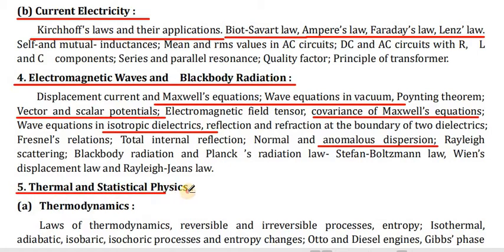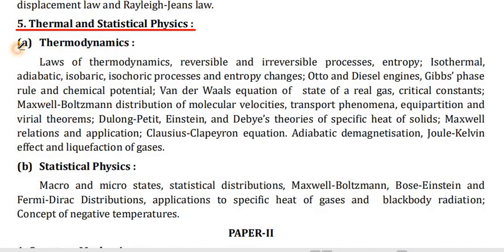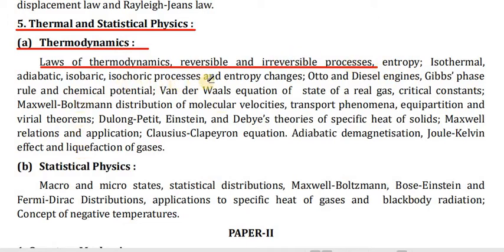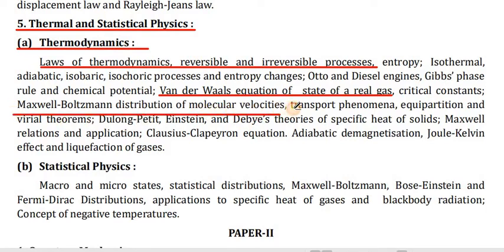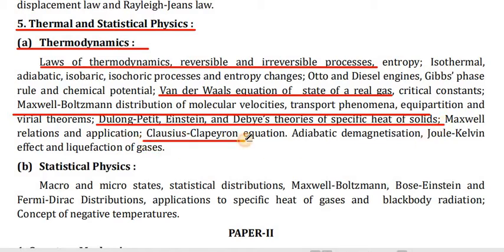Point 5: Thermal and Statistical Physics. Section A — Thermodynamics: laws of thermodynamics, reversible and irreversible processes, entropy, isothermal, adiabatic, isobaric, isochoric processes, entropy changes, Otto and Diesel engines, Gibbs phase rule and chemical potentials, Van der Waals equation of state of real gases, critical constants, Maxwell-Boltzmann distribution of molecular velocities, transport phenomena, equipartition and virial theorem, Dulong-Petit, Einstein and Debye theory of specific heat of solids, Maxwell relations and applications, Clausius-Clapeyron equation, adiabatic demagnetization, Joule-Kelvin effect and liquefaction of gases.